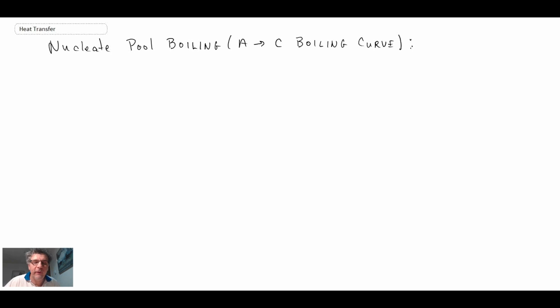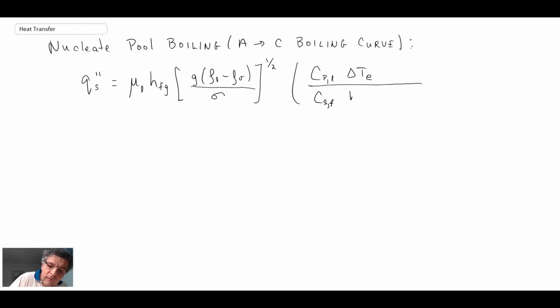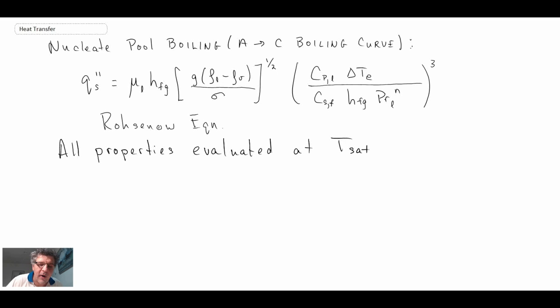So for nucleate pool boiling, we're from A to C on the boiling curve. And the relationship for the heat flux in the nucleate pool boiling region is as follows. This equation is referred to as being the Rosenau equation, and it is one of the most widely used equations for pool boiling. In this equation, all properties are evaluated at the saturation temperature. And what you'll be doing is you'll be using steam tables in order to find all of the different properties, because you need both the liquid and the vapor, and so the steam tables are convenient for that.